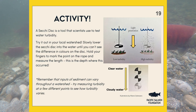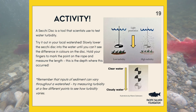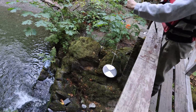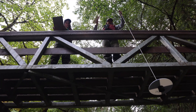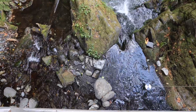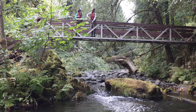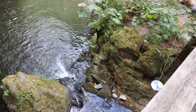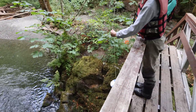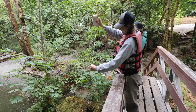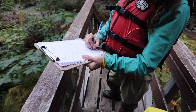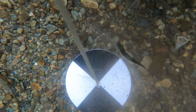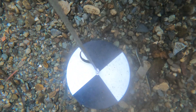A Secchi disc is a tool that scientists use to test water turbidity. Try it out in your local watershed. Slowly lower the Secchi disc into the water until you can't see the difference in colours on the disc. Hold your fingers to mark the point on the rope and measure the length — this is the depth where this occurred. Remember that inputs of sediment can vary throughout a watershed, so try measuring turbidity at a few different points to see how it varies.